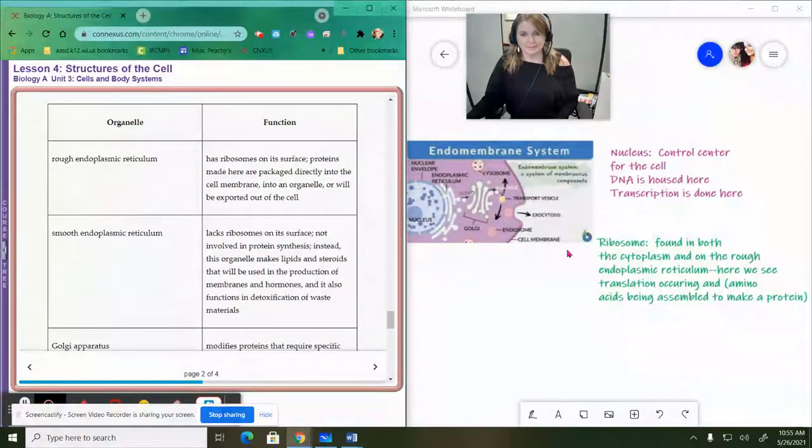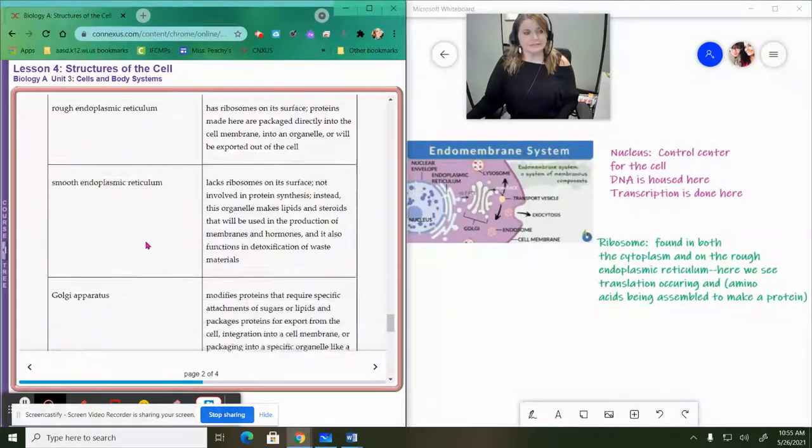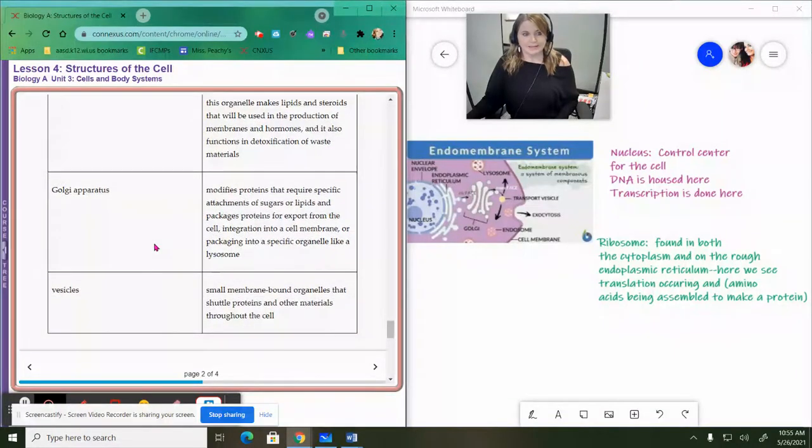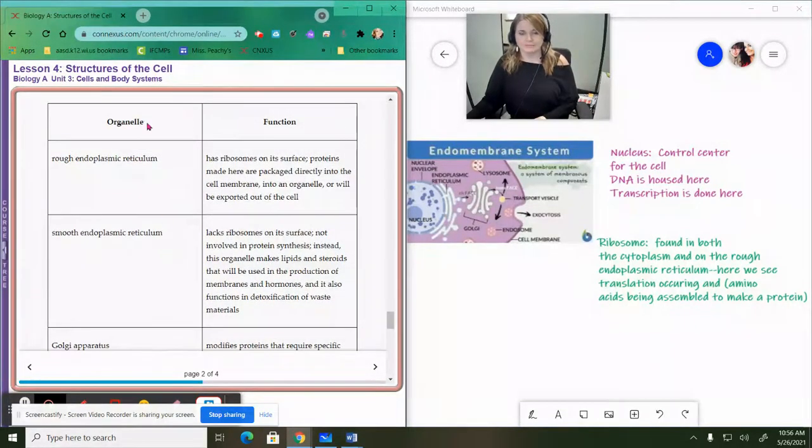So we did our ribosome and our nucleus here. And then we have these organelles that make up the rest of the endomembrane system, the rough endoplasmic reticulum, the smooth endoplasmic reticulum, the Golgi apparatus, and the vesicles. So I'm not going to really type anything up for these because they're written right here in the lesson for you, but the rough endoplasmic reticulum, as it says here has ribosomes on its surface. And this is where translation has taken place where the amino acids are assembled into a protein.